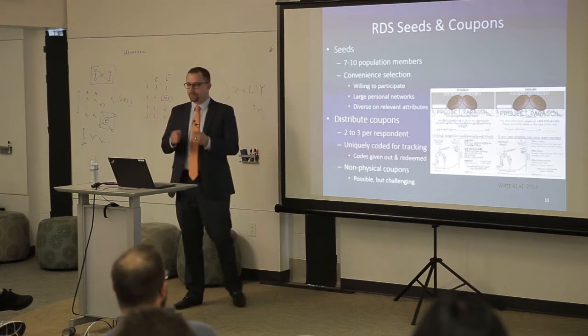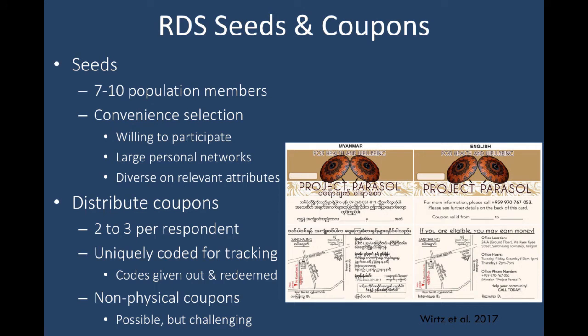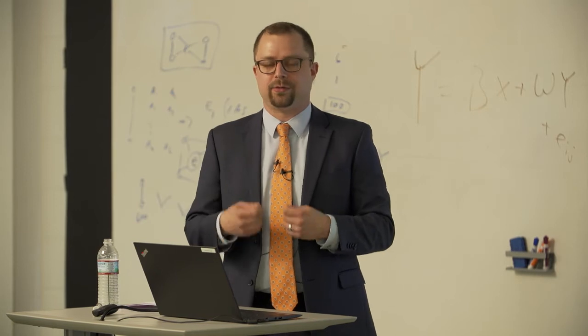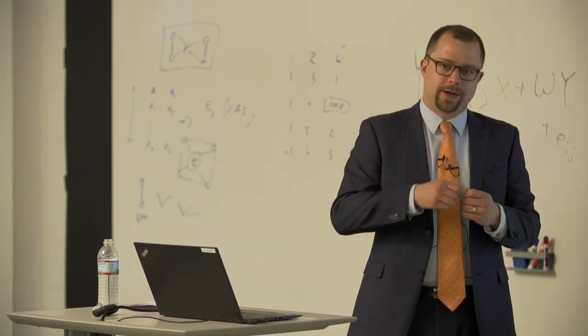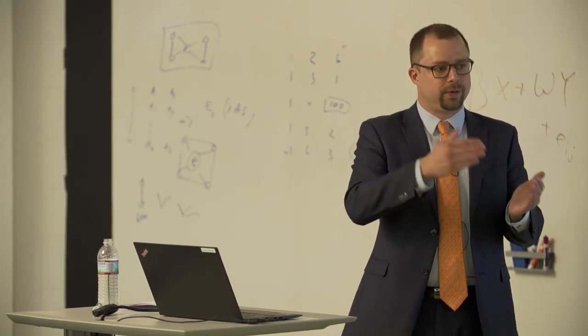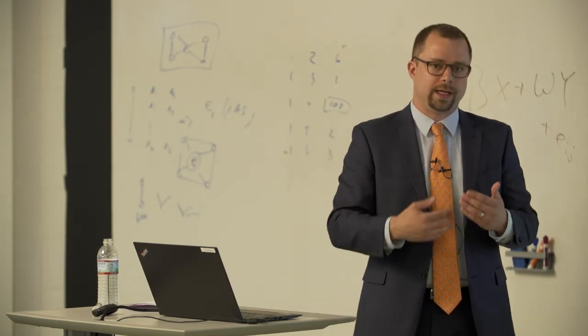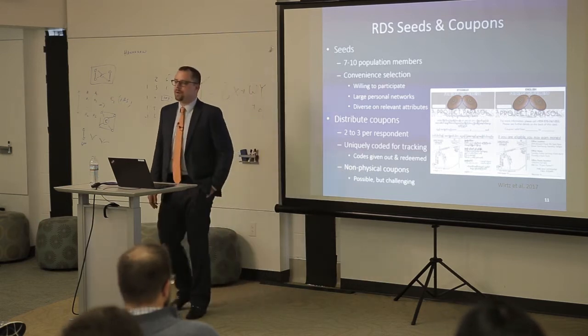You distribute two to three coupons per person. This is an example coupon from a project in Myanmar, containing information about the survey — where the study site is, how much you'll get compensated, what the survey is about. You give respondents physical copies of these coupons and instruct them to hand them to someone else in the population they know. Those people take the coupons back to the survey site. One key feature is that you record both who you gave the coupon to and who redeems it, allowing you to track something like a social network link — you know that the person who gave it and the person who redeemed it are socially connected.